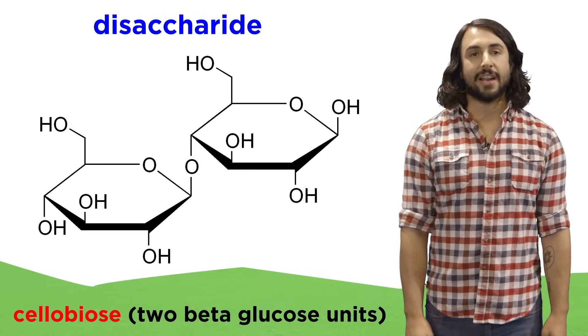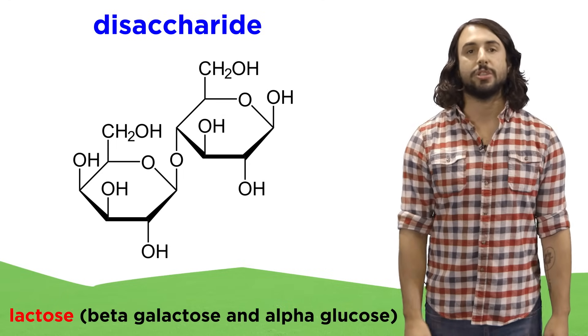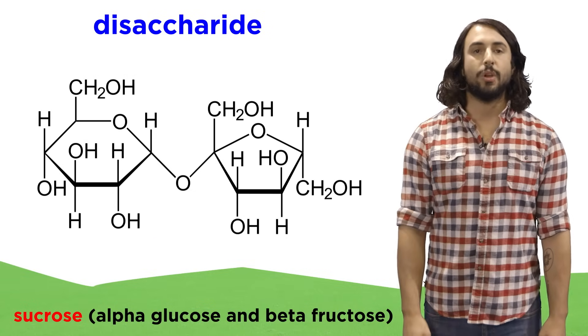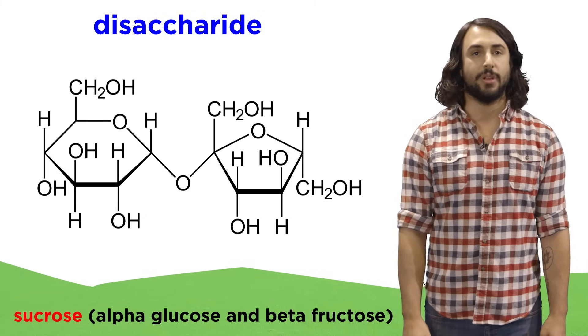Other common disaccharides are lactose, which is beta-galactose and alpha-glucose, and sucrose, or table sugar, which is alpha-glucose and beta-fructose.